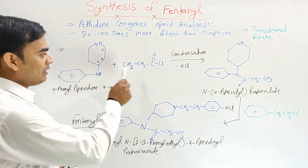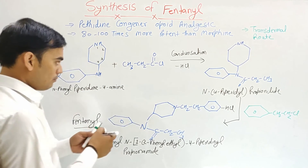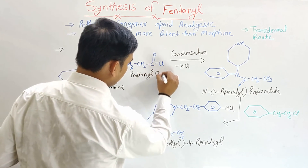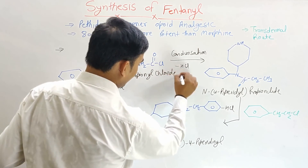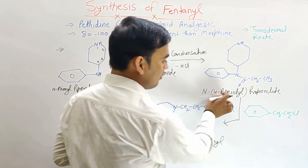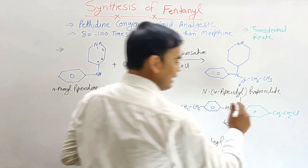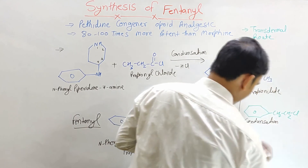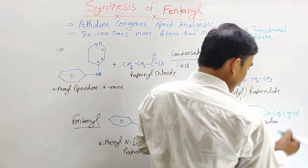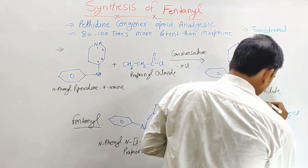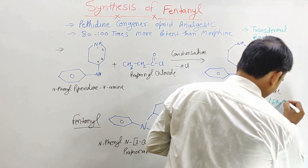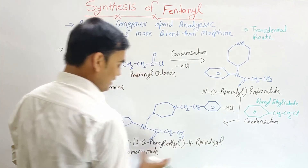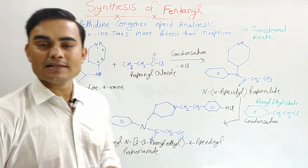To summarize: N-phenyl piperidin-4-amine reacted with propionyl chloride in a condensation reaction and formed N-4-piperidyl propionamide. That intermediate then underwent a second condensation reaction with phenylethyl chloride, and by this condensation reaction, fentanyl was formed. This is the synthesis of fentanyl. Thank you.